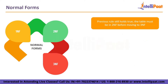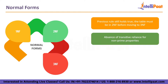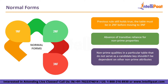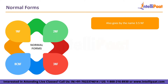The third normal form, 3NF, requires the table to first be in 2NF. The second requirement is the absence of transitive dependencies for non-prime attributes. A transitive dependency is a functional dependency where X determines Z indirectly — X determines Y, and Y determines Z — where it is not true that Y determines X.